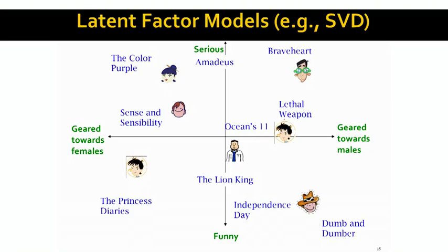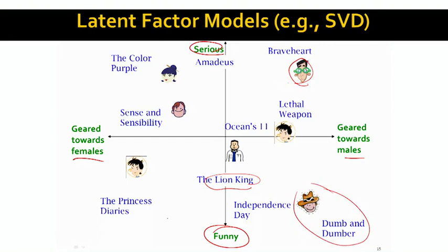Hypothetically, imagine our factorization discovers that our space has two main axes of variation: movies geared towards females versus guys' movies, and then serious versus funny movies. Every user is a data point somewhere in this space, and every movie is also a data point in this space. Some users and movies are closer together than others. That's what a latent factor recommender system does — it finds a low-dimensional representation of users and movies such that people who like those movies are close together.